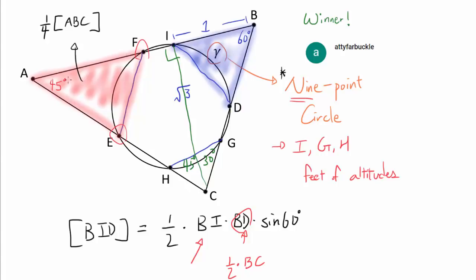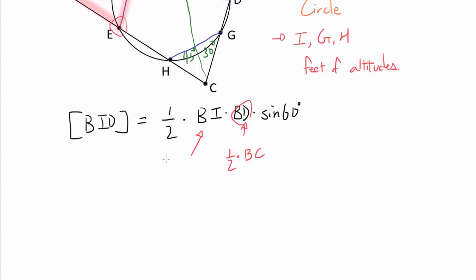And now turning our attention to 45-45-90 triangle, we know AI is square root of 3. So we know the entire AB is 1 plus square root of 3, telling us that BI is 1 over (1 plus square root of 3) times AB.